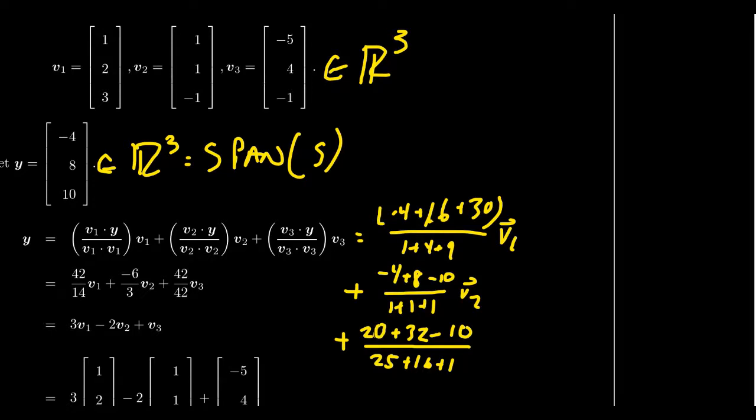And so, taking 20 plus 32, that's, of course, going to be 52 minus 10 is going to be 42. And that sits above 25 plus 16 plus 1, which also equals 42, which case, then, it simplifies just to be 1.